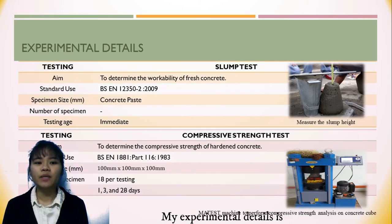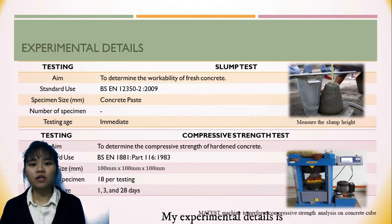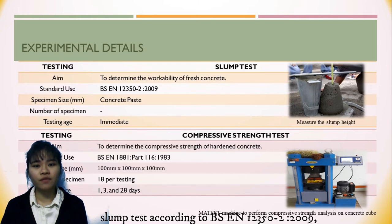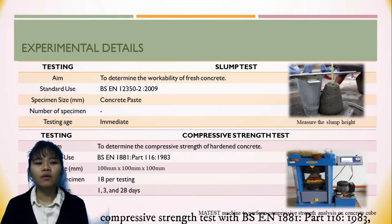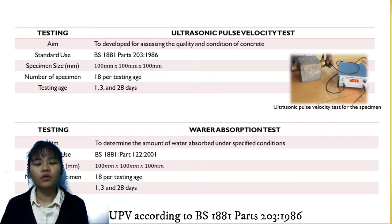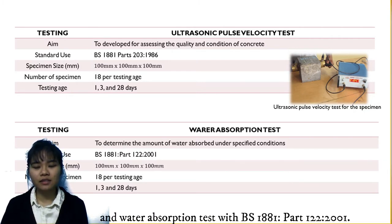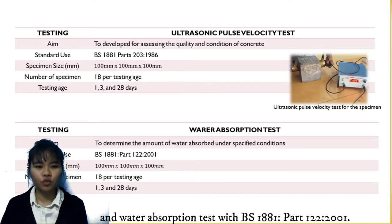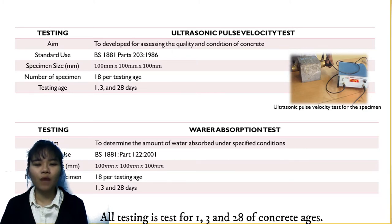My experimental details: slump test is according to BS EN 12350 Part 2; compressive strength is according to BS 1881 Part 116; UPV according to BS 1881 Part 203; and the water absorption test is according to BS 1881 Part 122. All testing is for 1, 3, and 28 days.